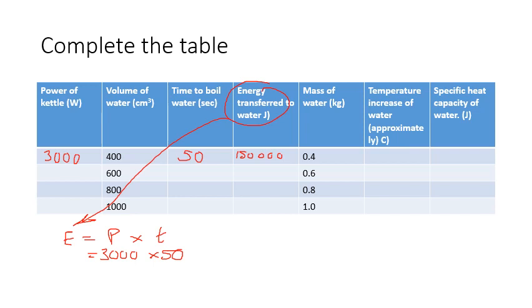Now I know that one centimeter cubed of water has a mass of one gram, so 400 centimeters cubed of water is going to be a mass of 0.4 kilograms. I'm now going to use my other equation, which is energy equals mass multiplied by specific heat capacity, multiplied by the temperature change.